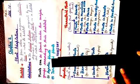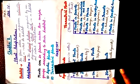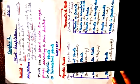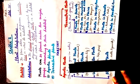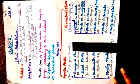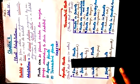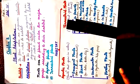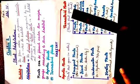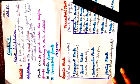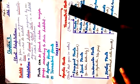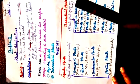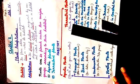First is aquatic plant and second is terrestrial plant. Aquatic plant means plants that grow in water. Terrestrial plant means plants that grow on land.